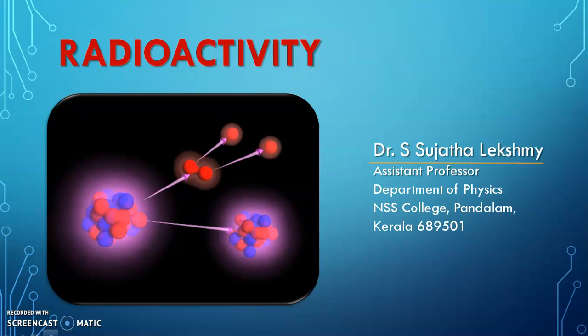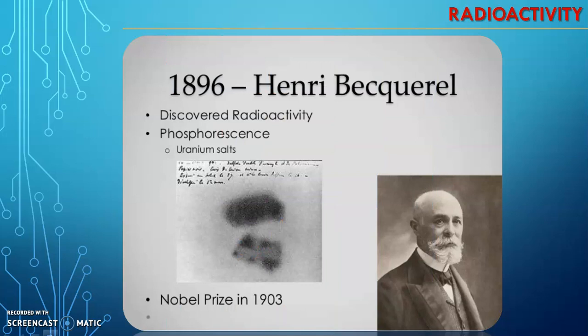We know that radioactivity is a spontaneous and self-disintegrating activity exhibited by several elements having a mass number greater than 206. Also, radioactivity was discovered accidentally by Henry Becquerel in 1896 during the study of fluorescence exhibited by double sulfate of uranium activated by sunlight. It was also found that some sort of powerful radiations coming from the uranium salt affected the photographic plate wrapped in black paper.